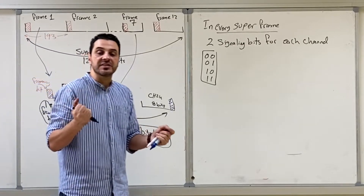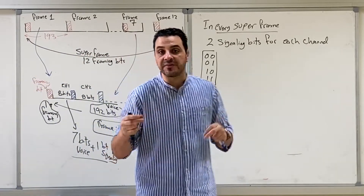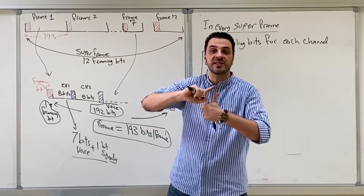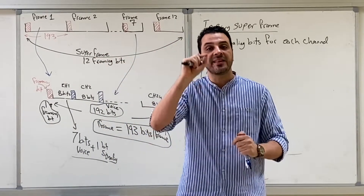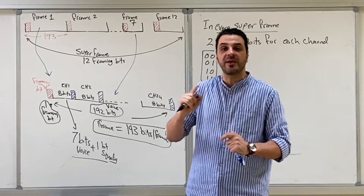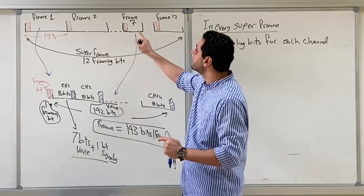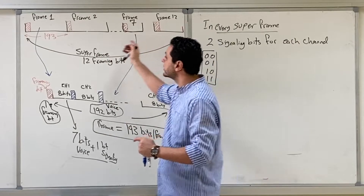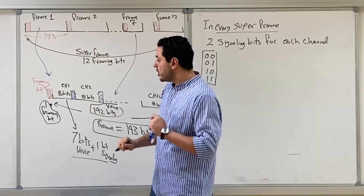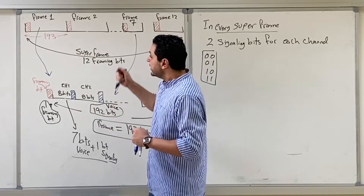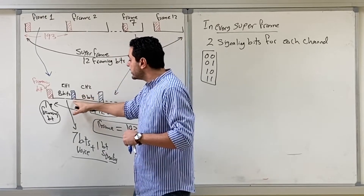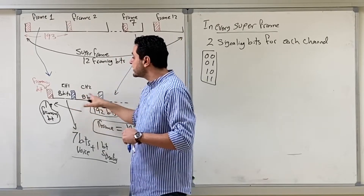It was important for the receiver to know which frame is frame number one and which is frame number seven in order to detect the signaling bits. This is what was accomplished using the framing bits in the previous video — the receiver can synchronize and identify the order of frames within the super frame, knowing frame one, two, three, and so on.